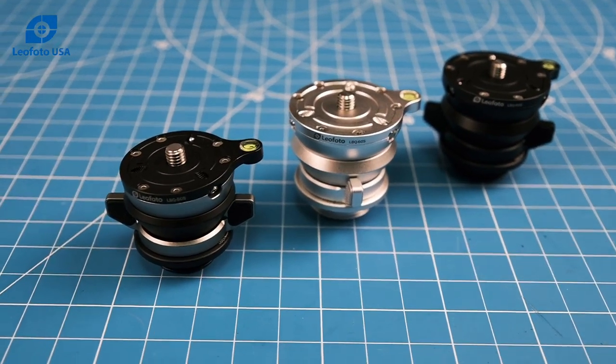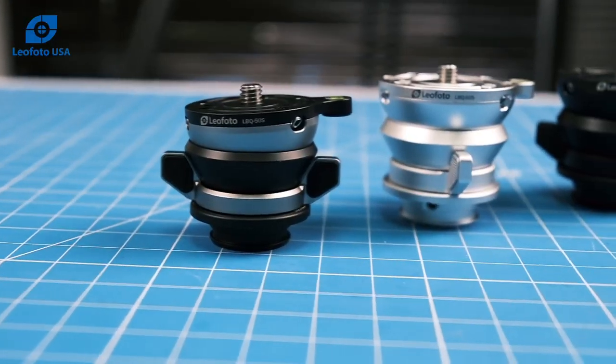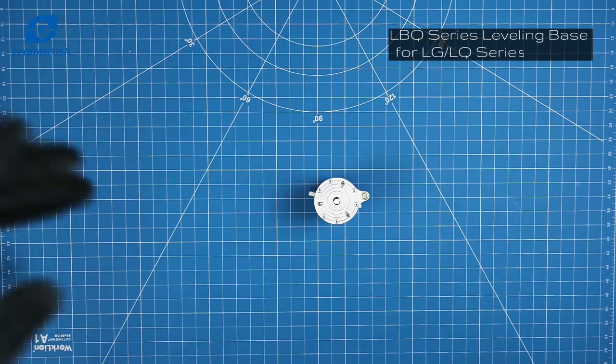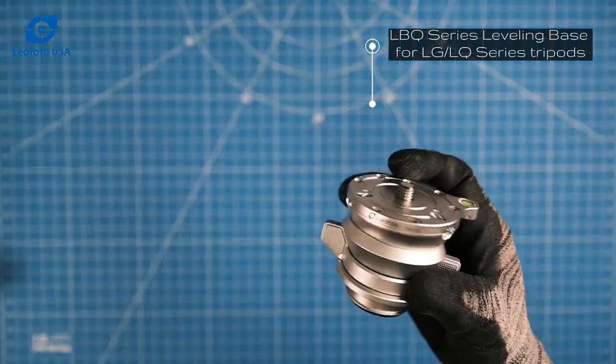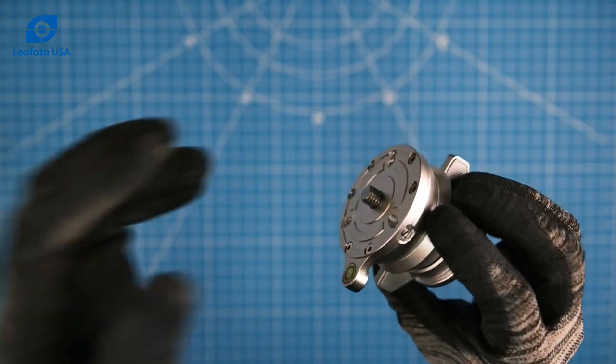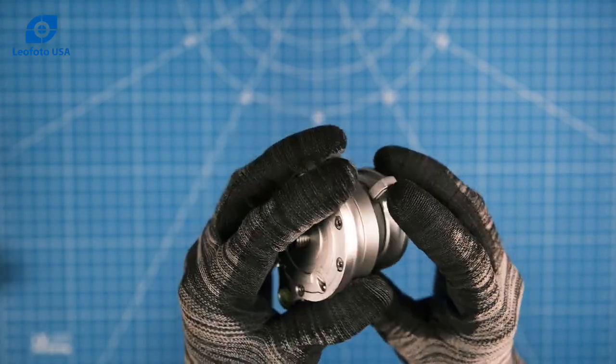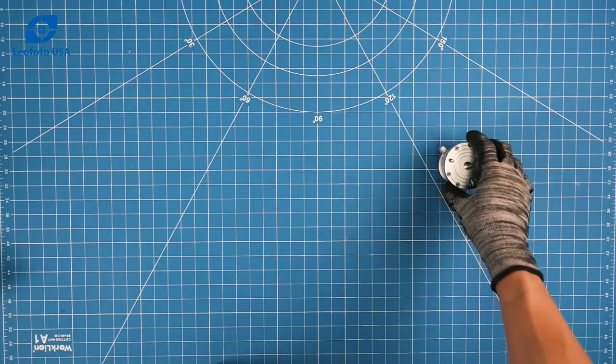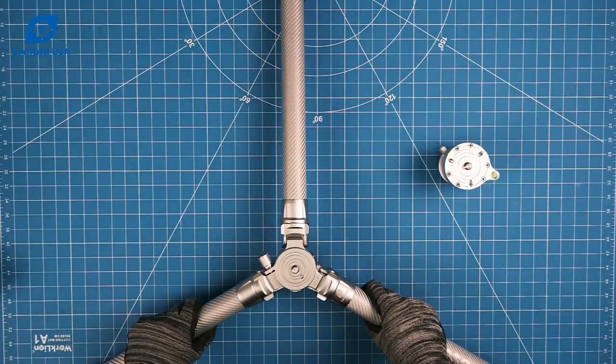Next we have the LBQ series leveling bases. These come in black and silver standard, all silver, and all black. These are made for the LG and LQ series tripods. They basically replace the center column. There are two ways to mount the LBQ onto the tripod.